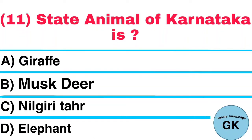Question Number 11. State Animal of Karnataka is: A. Giraffe, B. Musk Deer, C. Neil Girita, D. Elephant. Answer: Elephant.